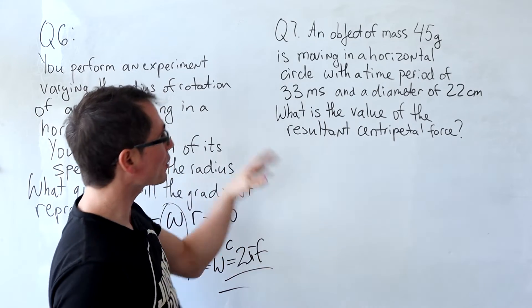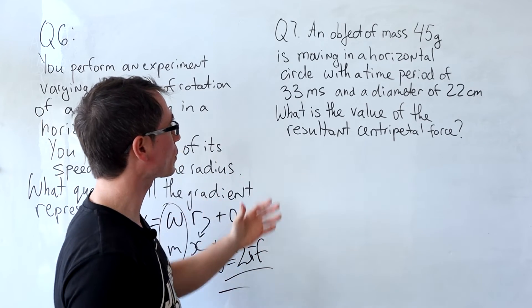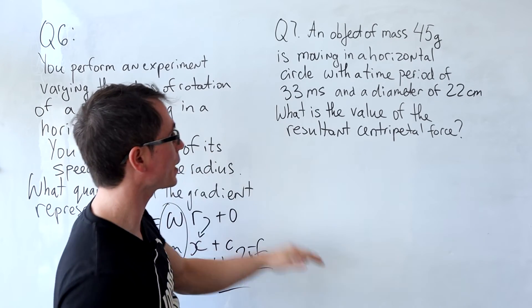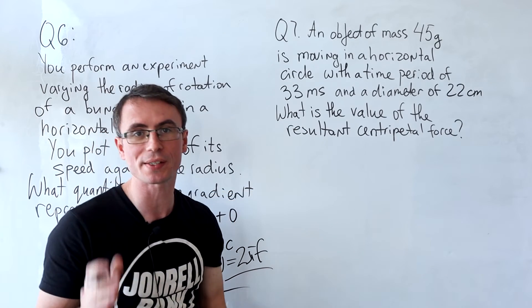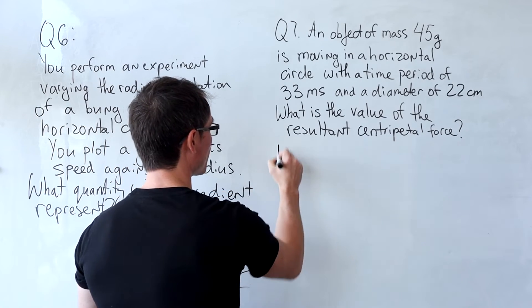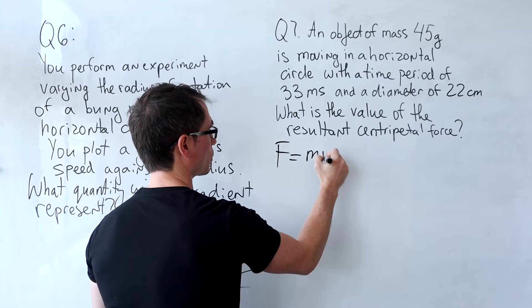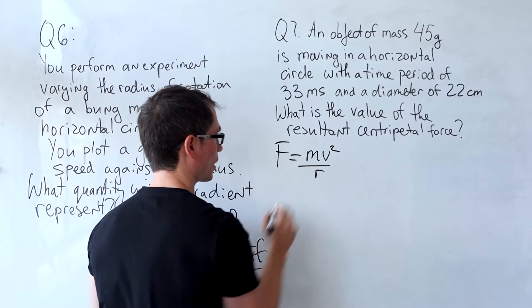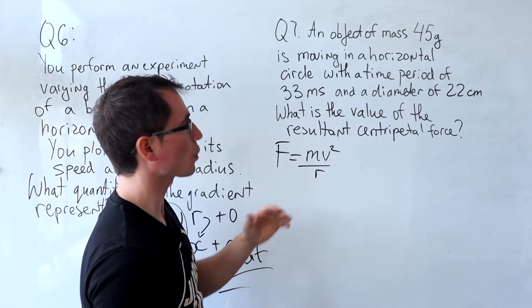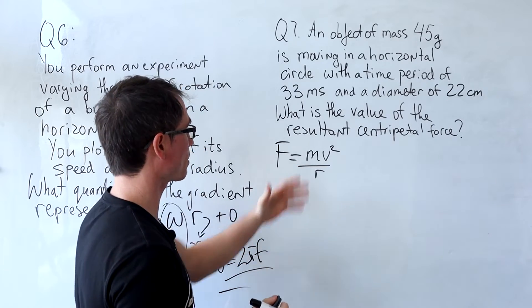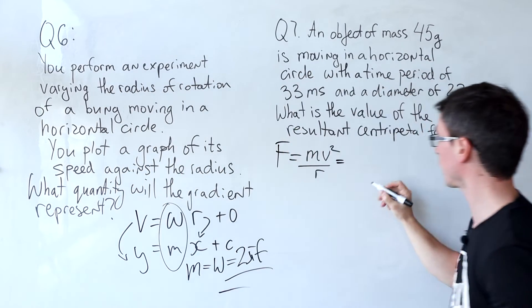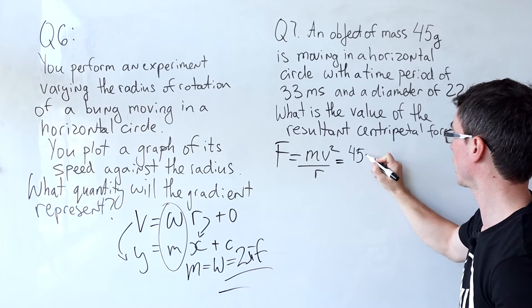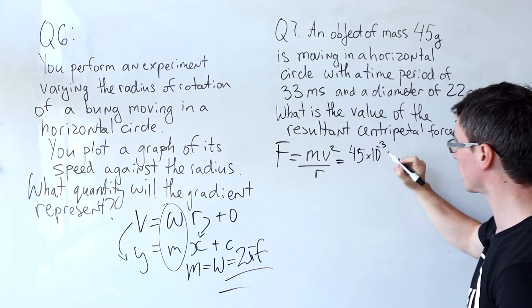Next one we have an object of mass 45 grams moving in a horizontal circle with the time period and the diameter. What is the value of the resultant centripetal force? Well the resultant force is equal to mv squared divided by r. We have quite a lot of variation in the units so the SI base unit for the mass is the kilogram so we're going to have to convert the 45 grams to kilograms which is 45 times 10 to the power of minus 3 kg.